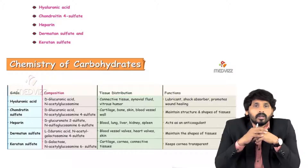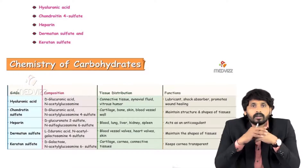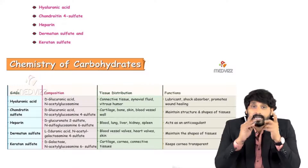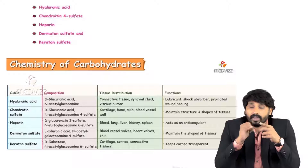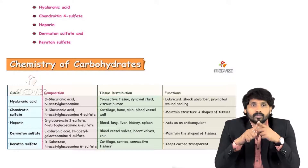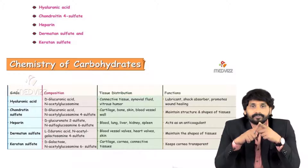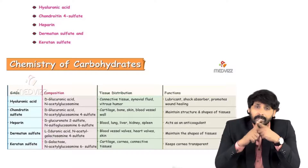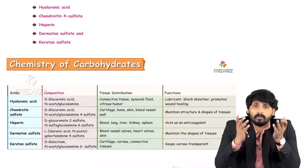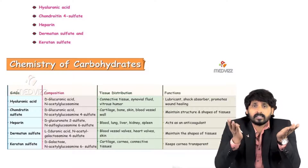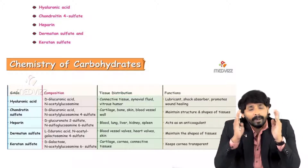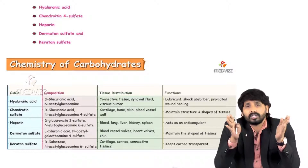Dermatan sulfate has the composition iduronic acid plus N-acetylgalactosamine. Here there is no glucosamine but galactosamine, which is sulfated. It is present in blood vessels, heart valves, and skin, and it maintains the shape of the tissues.